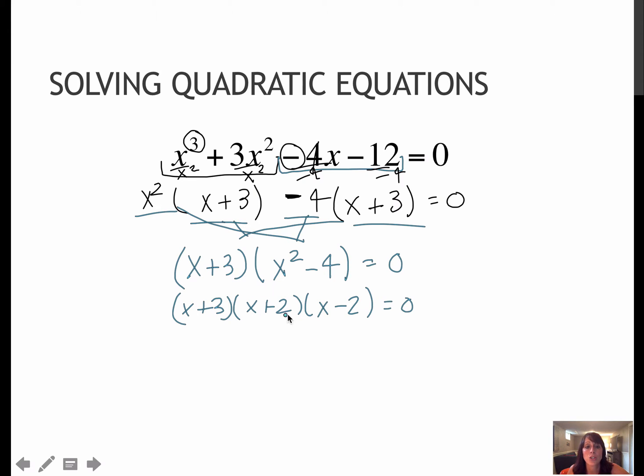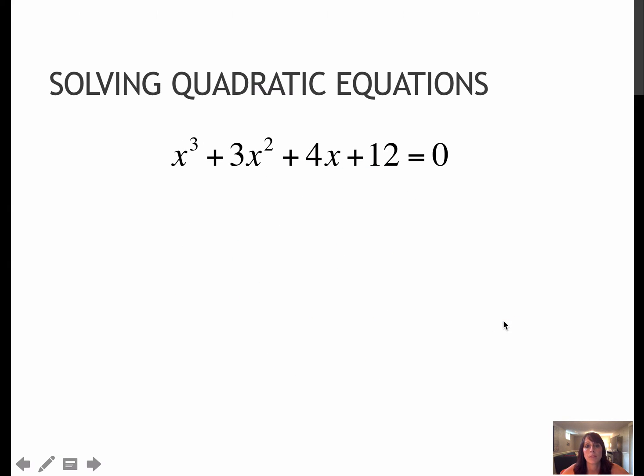Now that everything is to the first power, I'm going to set each binomial equal to 0 to find the three zeros. So my three zeros: setting this equal to 0 would give me negative 3, this would give me negative 2, and this would give me positive 2. So those are my three solutions.